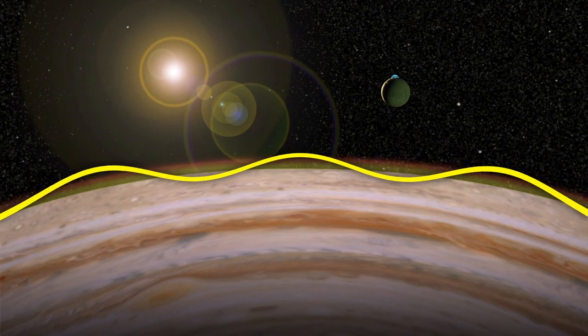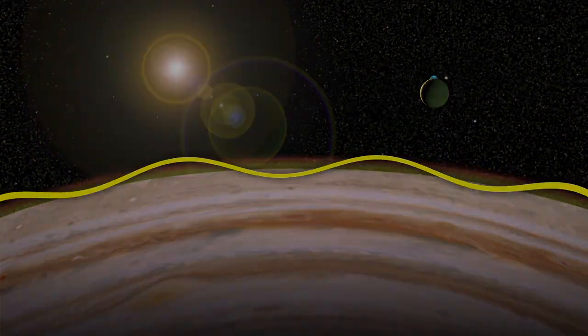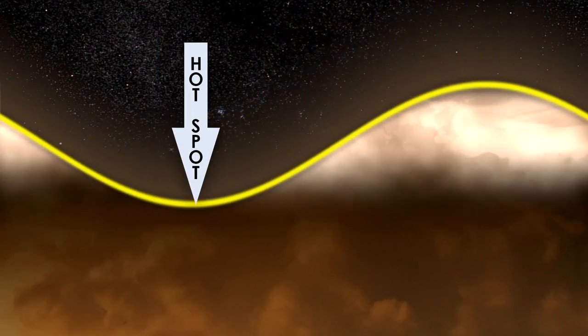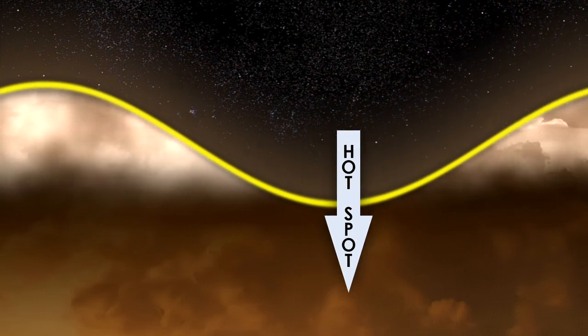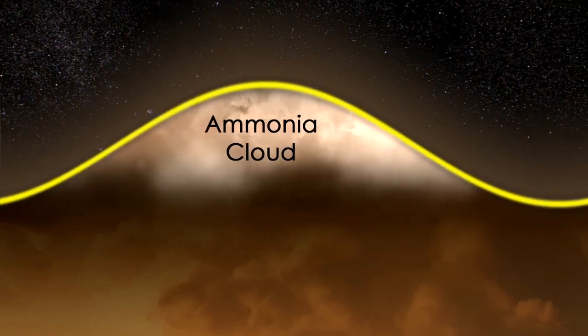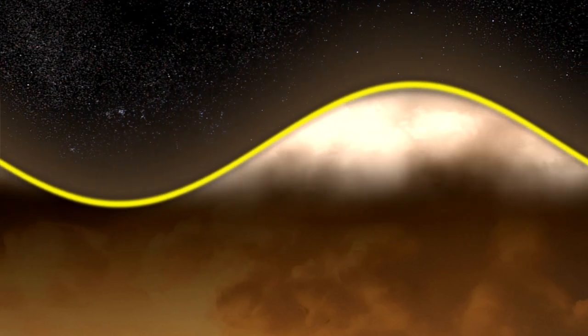The downward portion of the wave pushes air down into warmer layers of the atmosphere. This causes any clouds embedded within the wave to evaporate and prevents further clouds from forming.